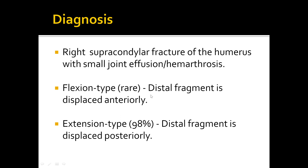Based on these findings, the diagnosis of right supracondylar fracture of the humerus with small joint effusion and hemarthrosis was given. Supracondylar fractures are commonly of two types: flexion type and extension type. The extension type is seen in 98 percent of the pediatric population.